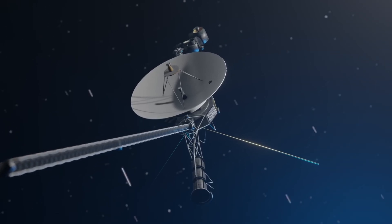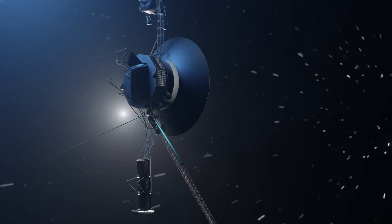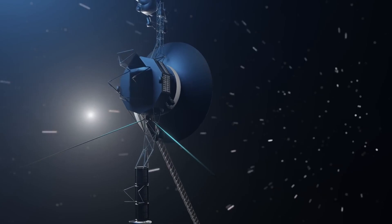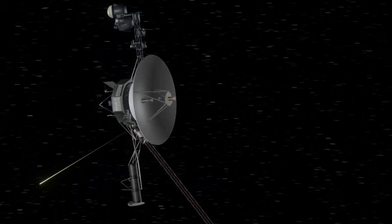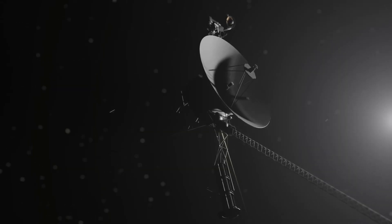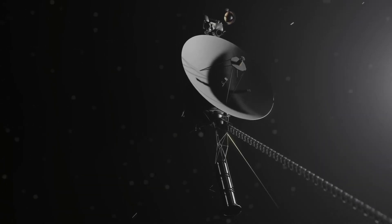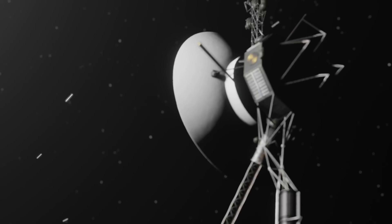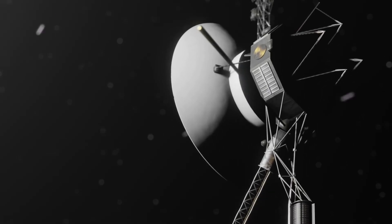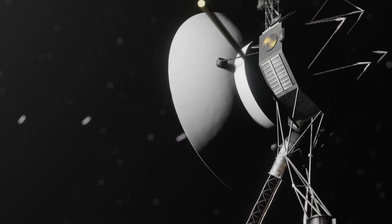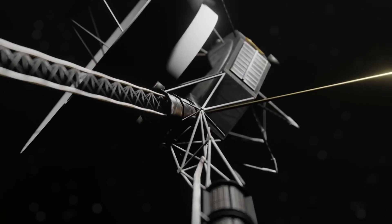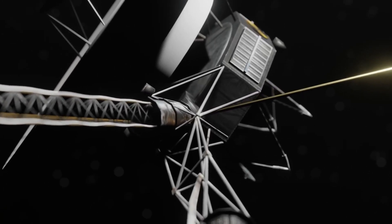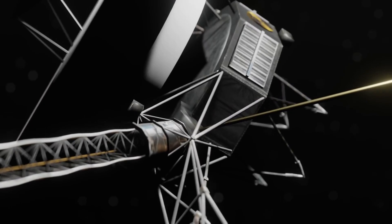The Voyager space probes have broken so many records during their time in space. Not only are they the furthest objects in space, but they've also been operating for the longest amount of time, over 45 years. It's incredible to think that after all that time spent in the harsh environment of space, the computers and systems that were designed here on Earth in the 70s are still functioning.